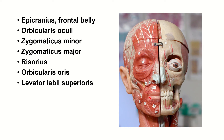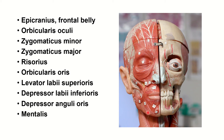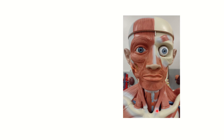There is also levator anguli oris, but it's difficult to see in this view so I did not label it there. Depressor labii inferioris depresses the lower lip. Depressor anguli oris depresses the corner of the mouth. Mentalis is located in the chin area.